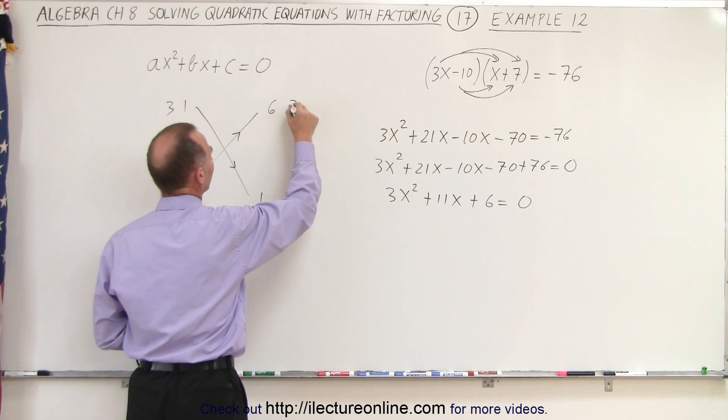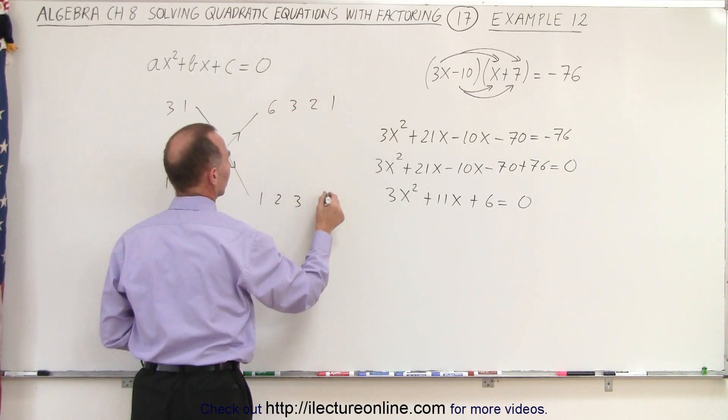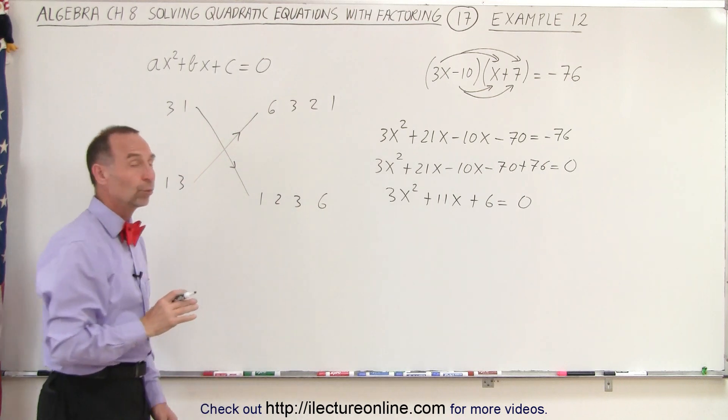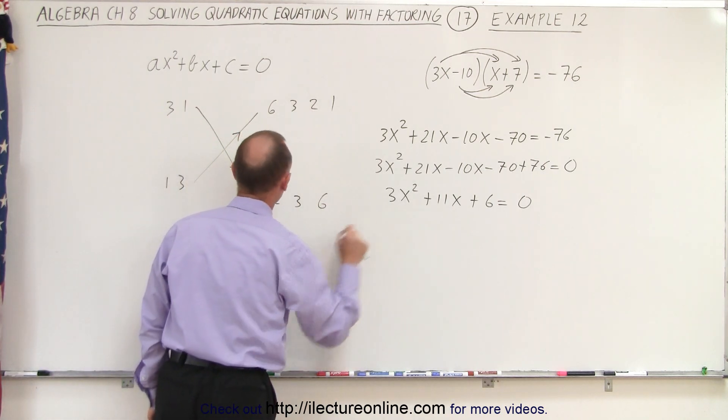We have 6 and 1. We have 3 and 2, 2 and 3, and 1 and 6. So one of these combinations will give us the proper middle term. Notice we need an 11x here.